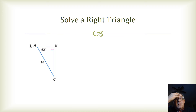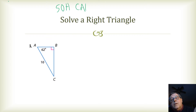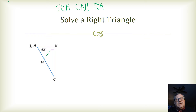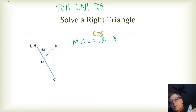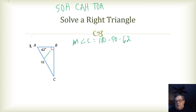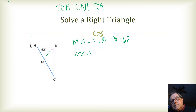For the next triangle, we know angle A is 62° and the hypotenuse is 10. Let's go ahead and find the measure of angle C using the triangle angle sum theorem: 180 minus 90 minus 62 equals 28. So the measure of angle C is 28°.